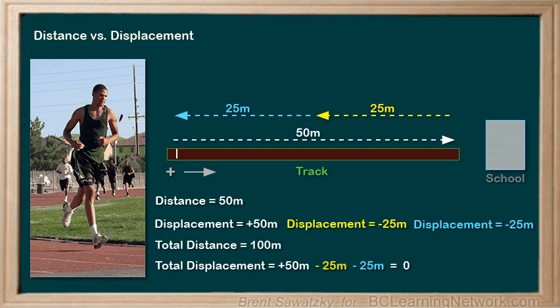In this tutorial, we looked again at displacement, and this time focused on how positives and negatives can effectively be used to indicate the directions of vectors.